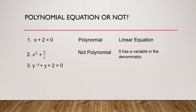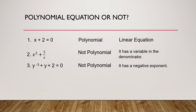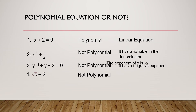For number 3, we have y raised to negative 3 plus y plus 2 equals 0. This one is not a polynomial since it has a negative exponent. For number 4, we have the square root of x minus 5. This one is not a polynomial because the exponent of x is 1 half.